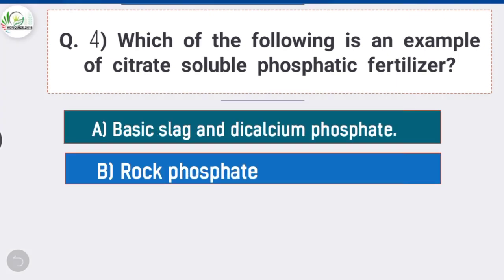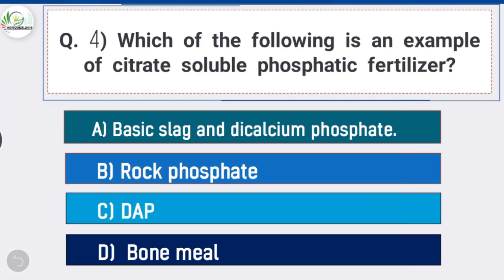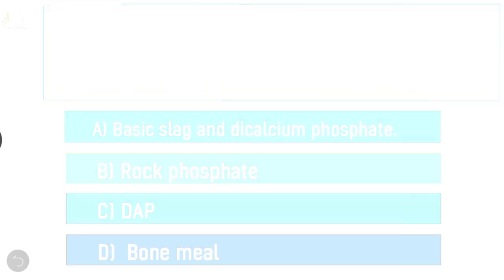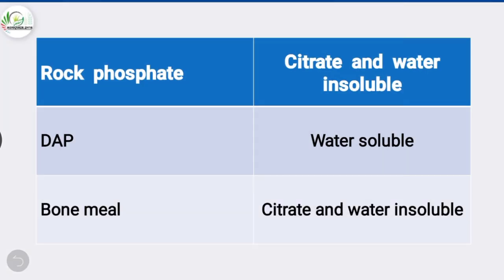Question number four: which of the following is an example of citrate soluble phosphatic fertilizer? Answer is option A — basic slag and dicalcium phosphate. Rock phosphate is an example of citrate and water soluble phosphatic fertilizer, and bone meal is an example of citrate and water insoluble phosphatic fertilizer.